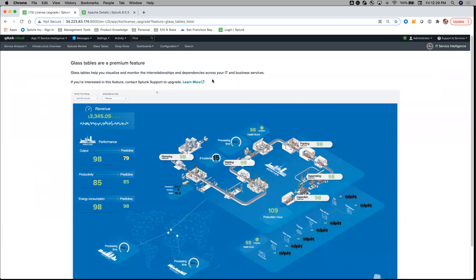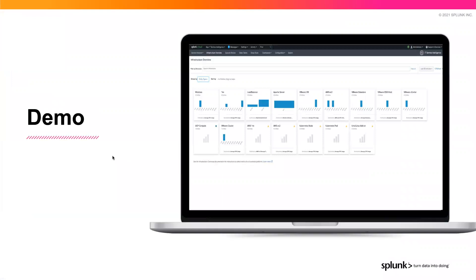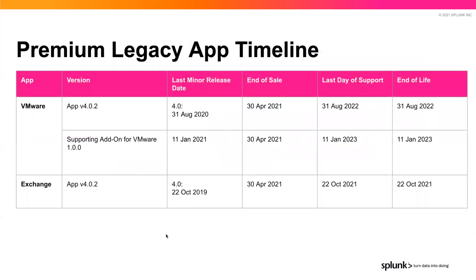We're going to quickly jump into content packs and why they're important. If you're on those premium legacy apps for infrastructure — VMware and Exchange in particular — those premium legacy apps are actually going to be included in IT Essentials Work, available in the cloud today and on-prem at the end of April, for free. We have a timeline here for when they're going to be end of sale — 30 April — last day of support at some point between now and January 2023, and then end of life.